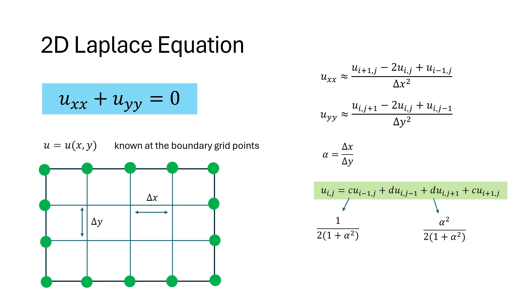Since the values of U are known at the boundary grid points, we can rearrange the known values on one side of the equation and then write this as a system of linear equations.